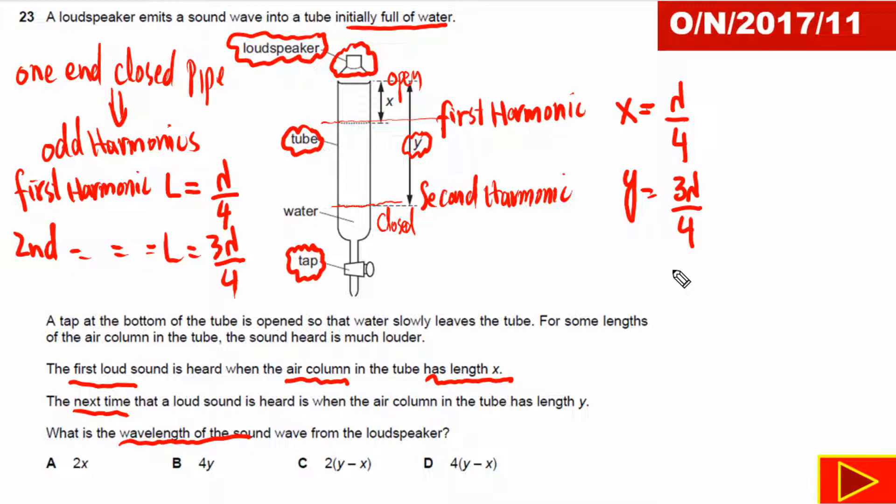And what we need to find out is the wavelength of sound. So we can simply subtract x from y, we can say y minus x, so this is 3 lambda by 4 minus lambda by 4. If we subtract we will get this is equal to lambda by 2. We can find lambda by multiplying y minus x with 2. So this is our final answer.